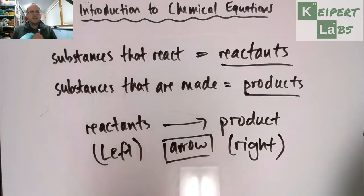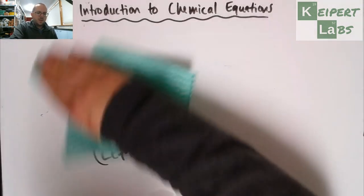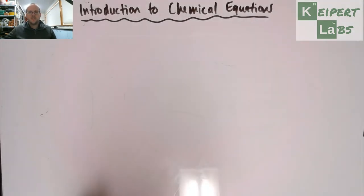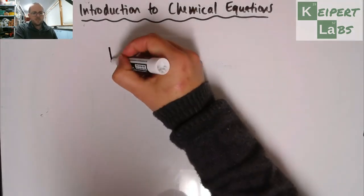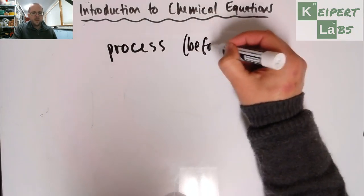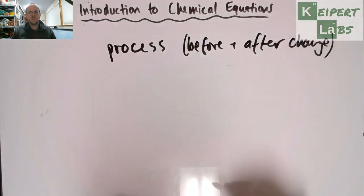Because the thing to remember here is that a chemical equation, a chemical reaction, involves changing from substances that were there to new substances that have been made, and so it represents a process. That's why we're talking about before and after. Before and after this changing process.